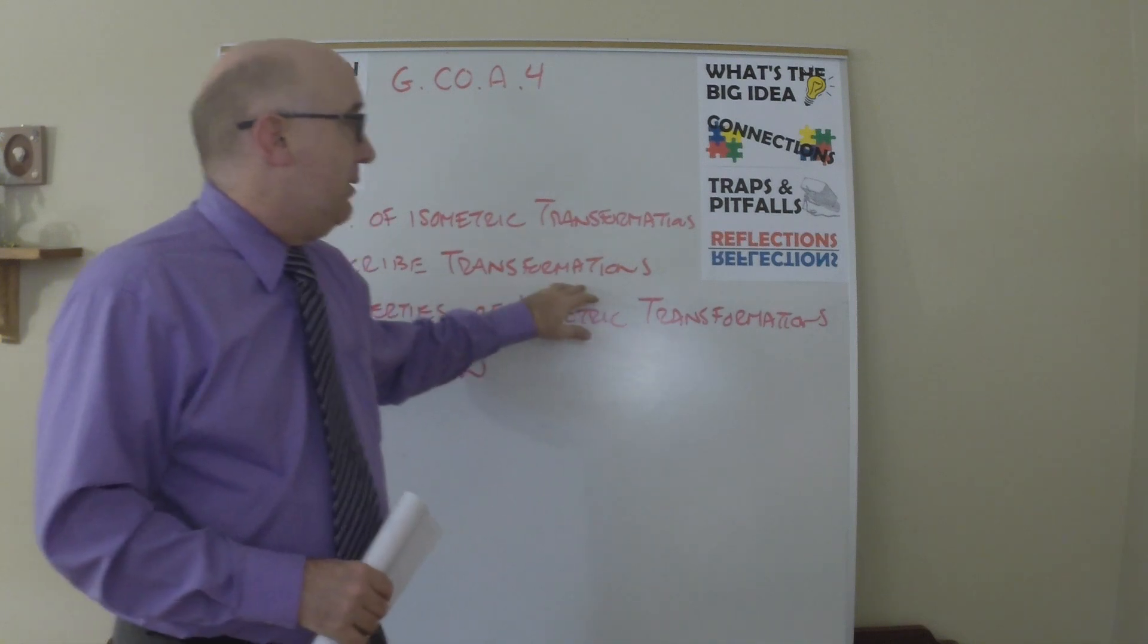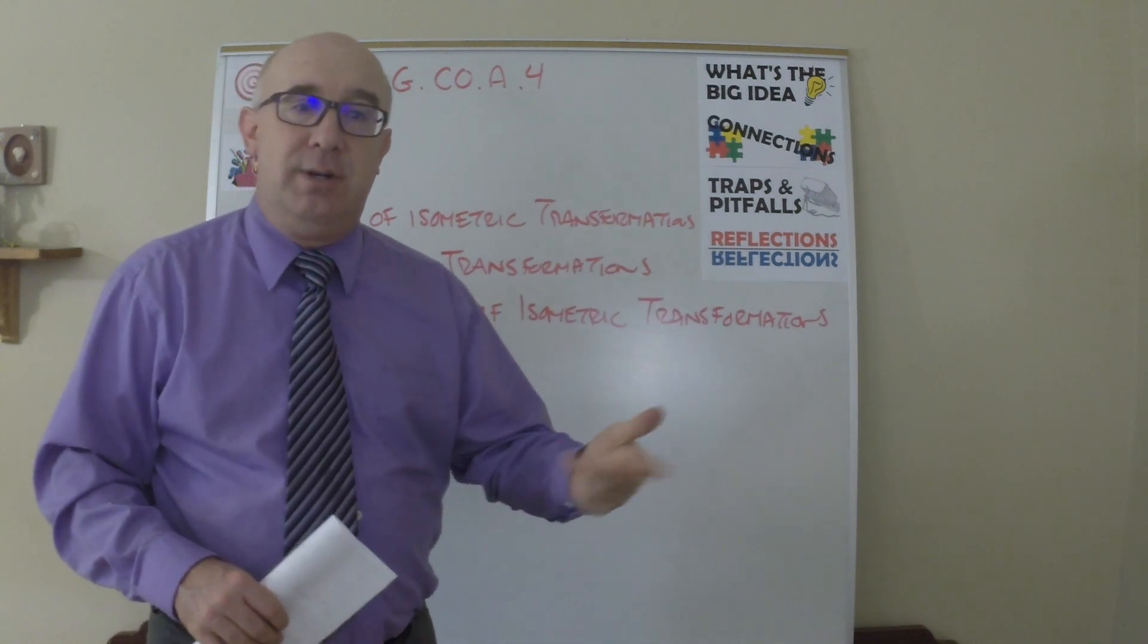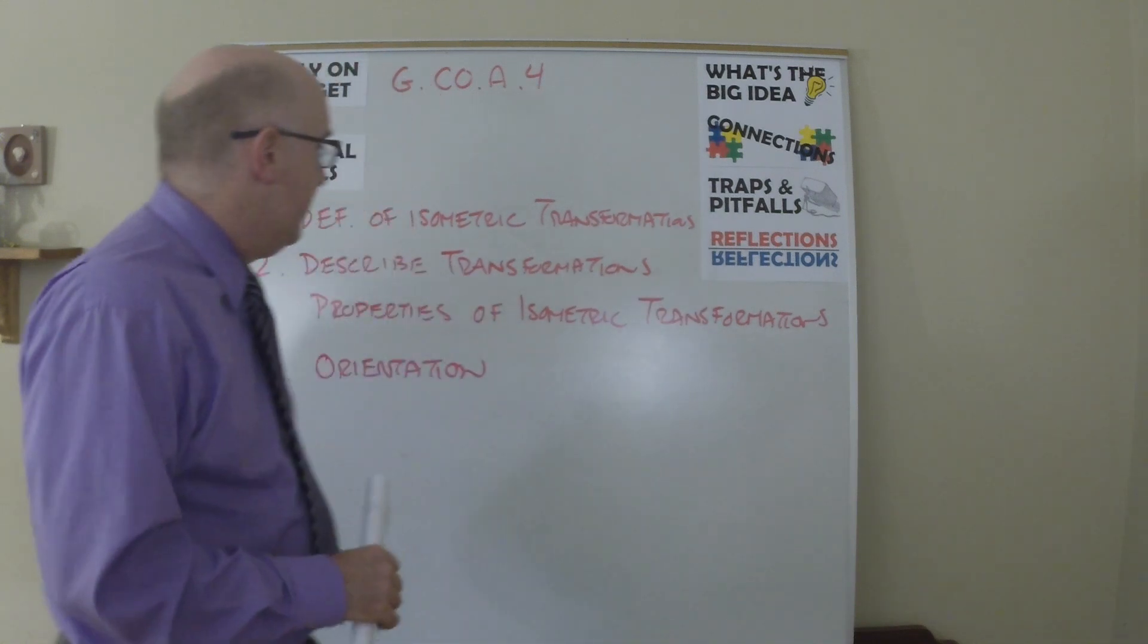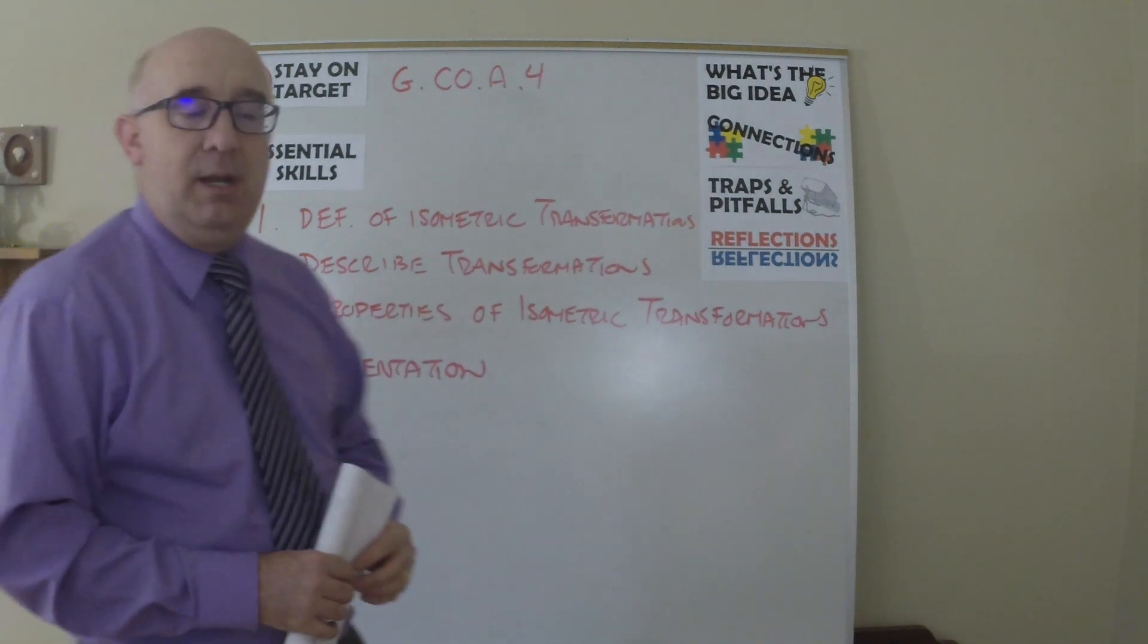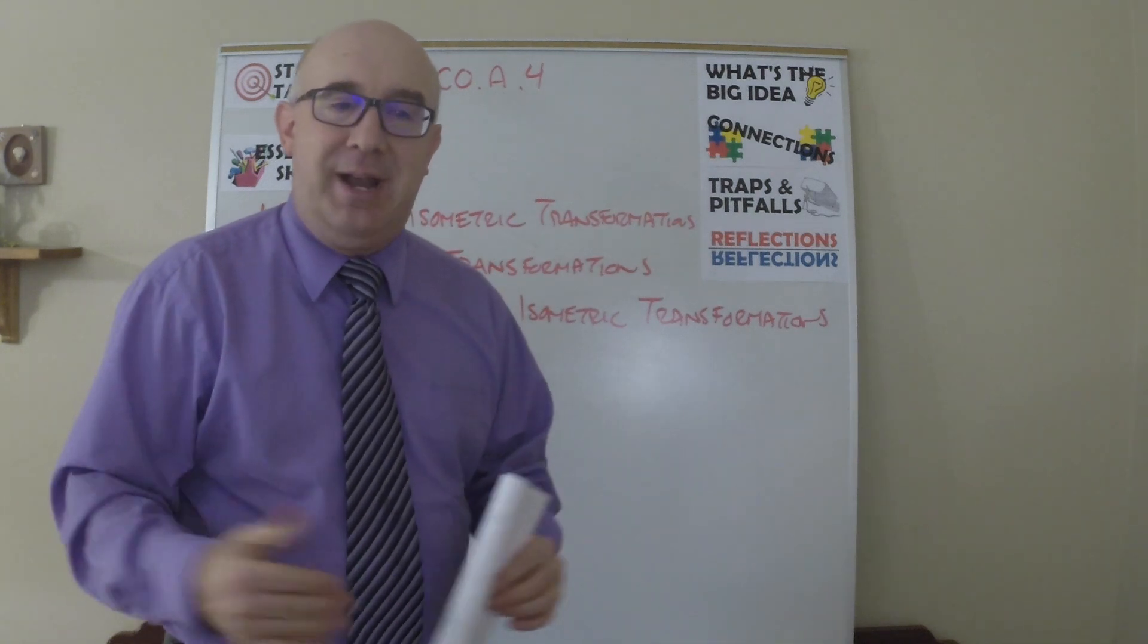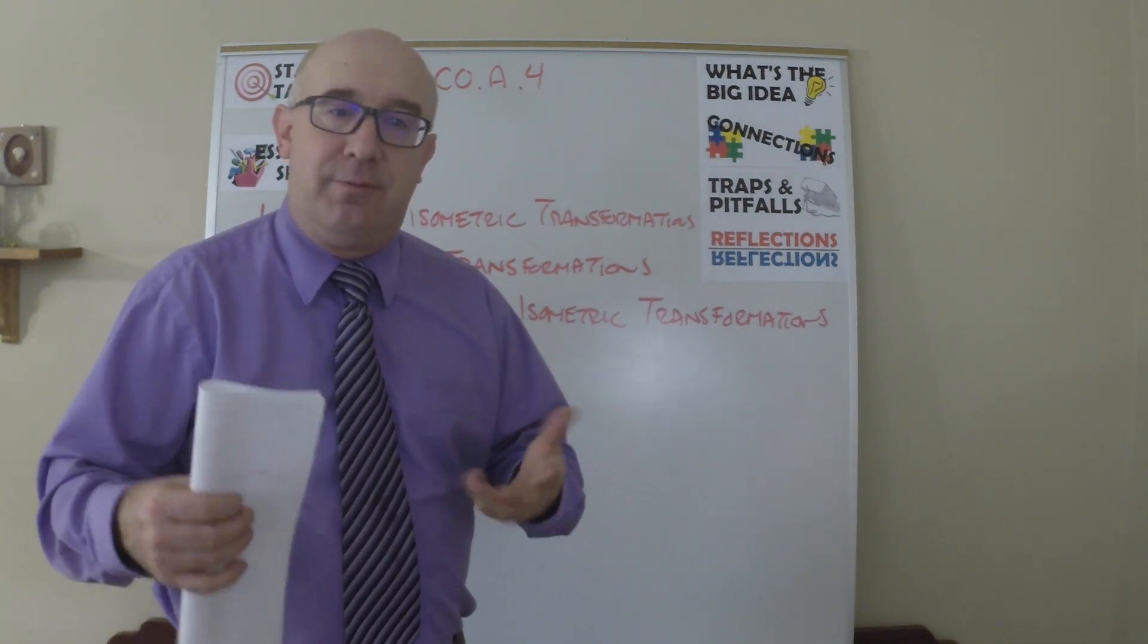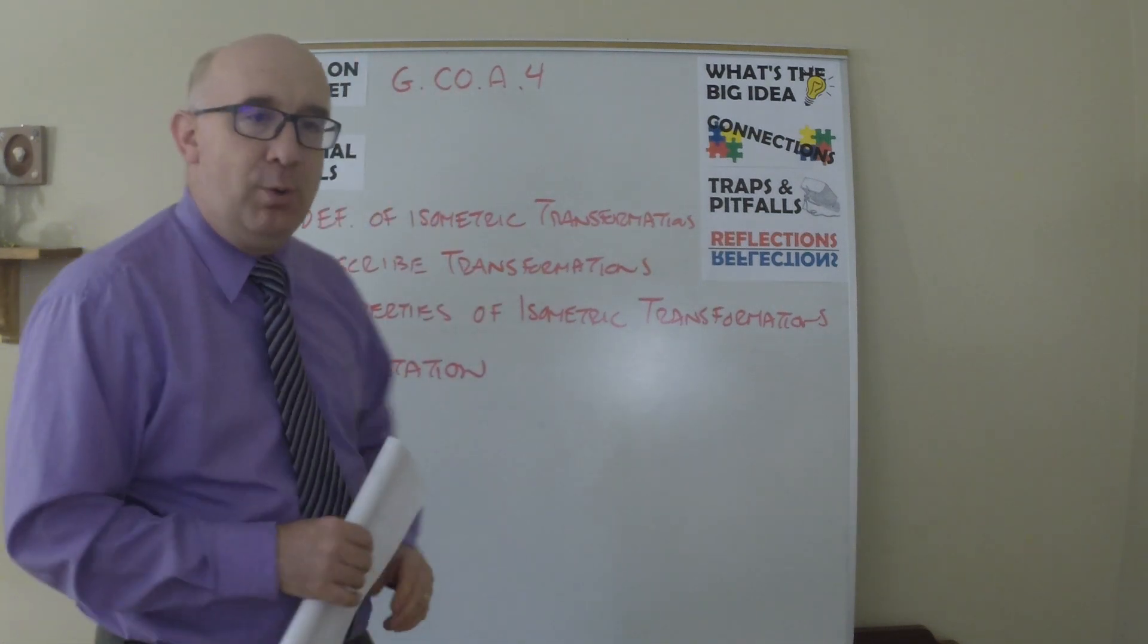We want students to be able to recognize what it is—that this is a rotation of 180 degrees about the point O, or whatever. So this is notation, properties of the isometric transformations. What happens when we translate? Oh, there's parallel lines that are formed. Why is that? All those types of things. And then finally, orientation of a shape.